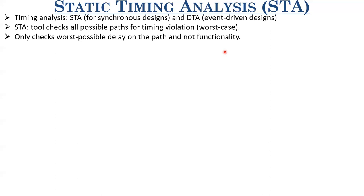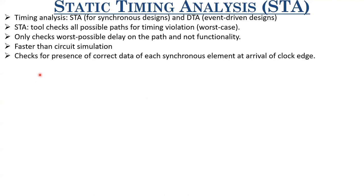The STA tool checks that the input which has to be sampled at node Q is being sampled correctly. Because it is not bothered about functionality — whether the output is correct or not — it is much faster than circuit simulation. It simply checks for the presence of correct data at each register at the arrival of the clock edge. It just checks those two timing constraints. If those are met, then whatever input had to be sampled at Q will be sampled upon arrival of the active clock edge.